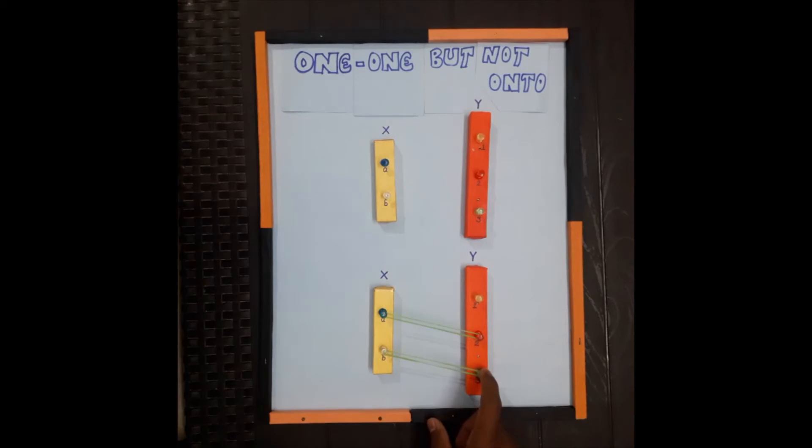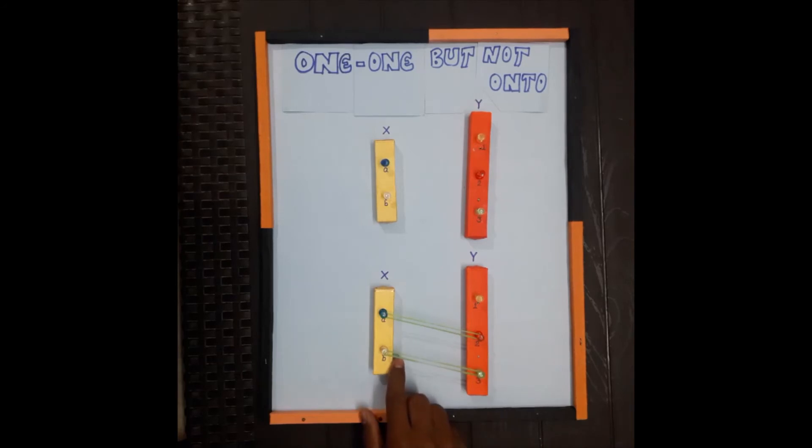Now it is clearly shown from here that the image of the element a of x in y is 2, and the image of b of x in y is 3.